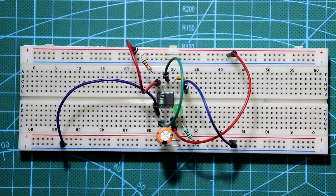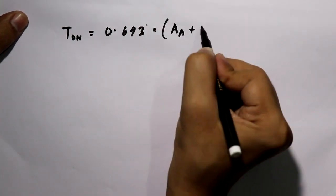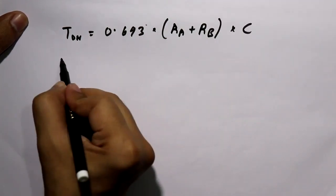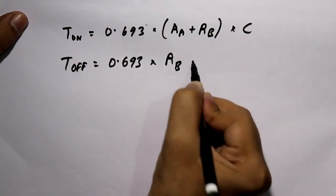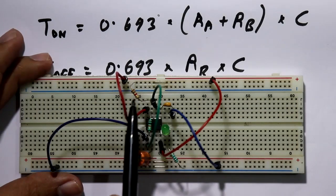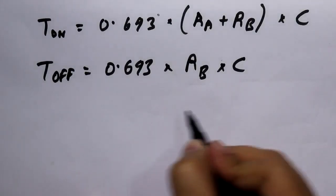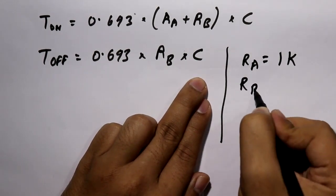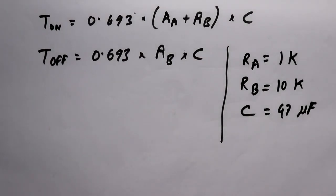Now let's calculate T_on and T_off. From the last video, the two equations are: T_on = 0.693 × (RA + RB) × C, and T_off = 0.693 × RB × C. Here RA = 1 kilohm, RB = 10 kilohm, and C = 47 microfarad.